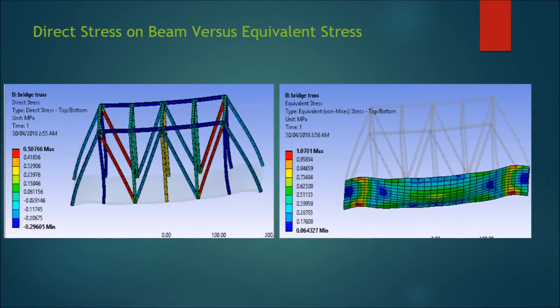For the direct stress, some beam members are in tension which gives the positive values and some are in compression which gives the negative values.